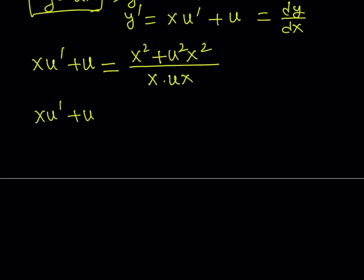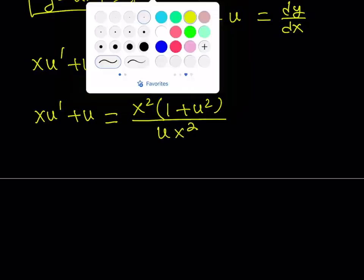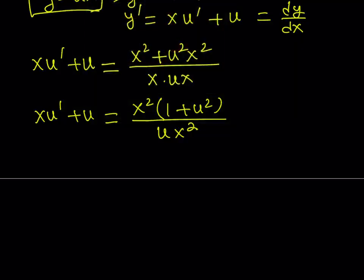So let's go ahead and simplify this a little bit more. x u prime plus u is equal to... Now, we can basically factor out x squared. That gives us 1 plus u squared. And at the bottom, we get something like u times x squared. Now at this point, we can just go ahead and simplify this. Since x does not equal 0, we already talked about that at the very beginning. x and y will not be 0.